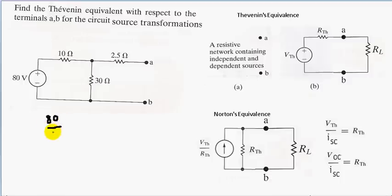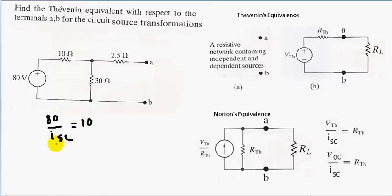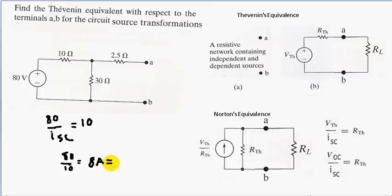We don't know I short circuit yet — that's our variable. I short circuit equals V Thevenin's over R Thevenin's. Our R Thevenin's corresponds to this 10 ohm resistor in series with the voltage source, so R Thevenin's is 10 ohms. Solving for I short circuit: 80 divided by 10 equals 8 amps.